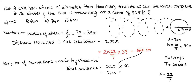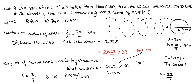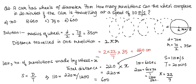Total distance = 220x. Speed = 110 metres per second, and time = 20 minutes = 1200 seconds. So 110 = 220x ÷ 1200. Solving: x = 600. The correct answer is D.